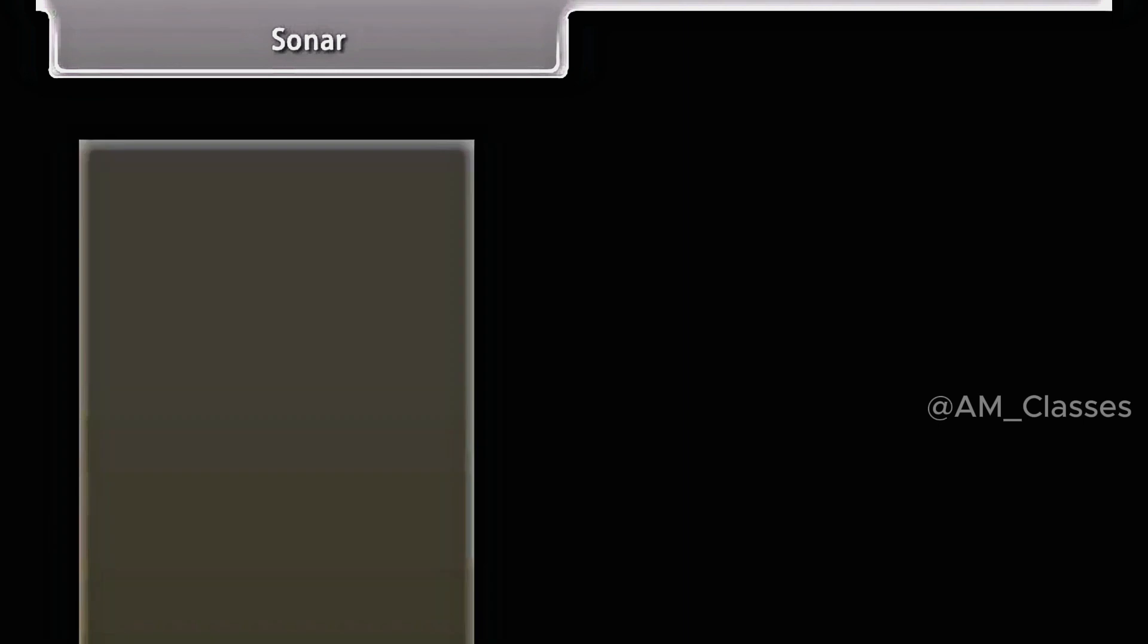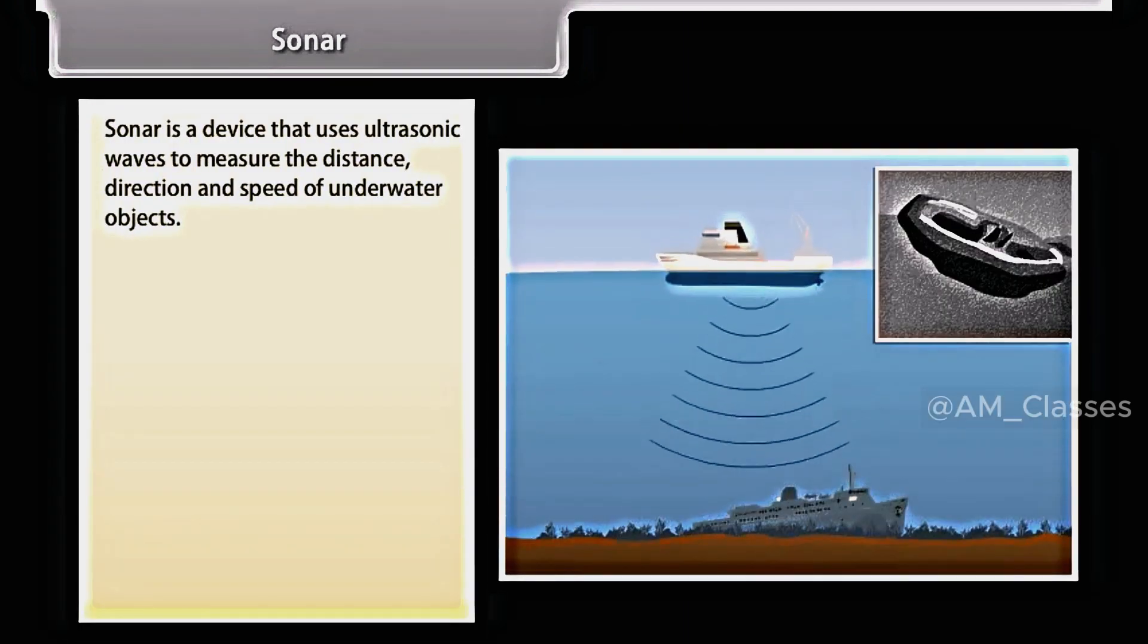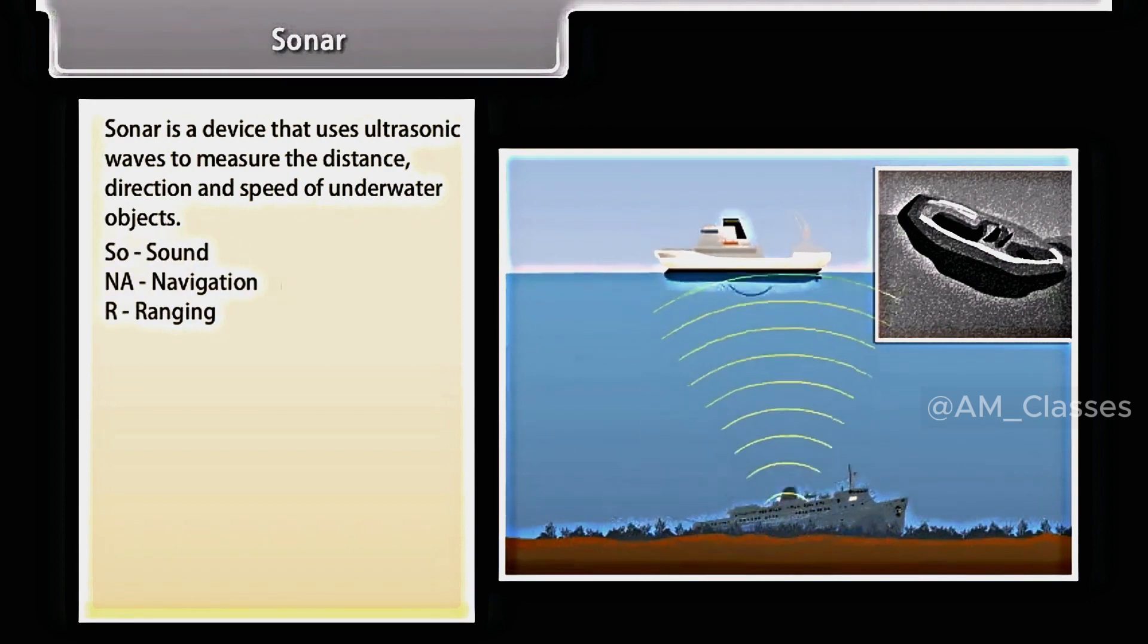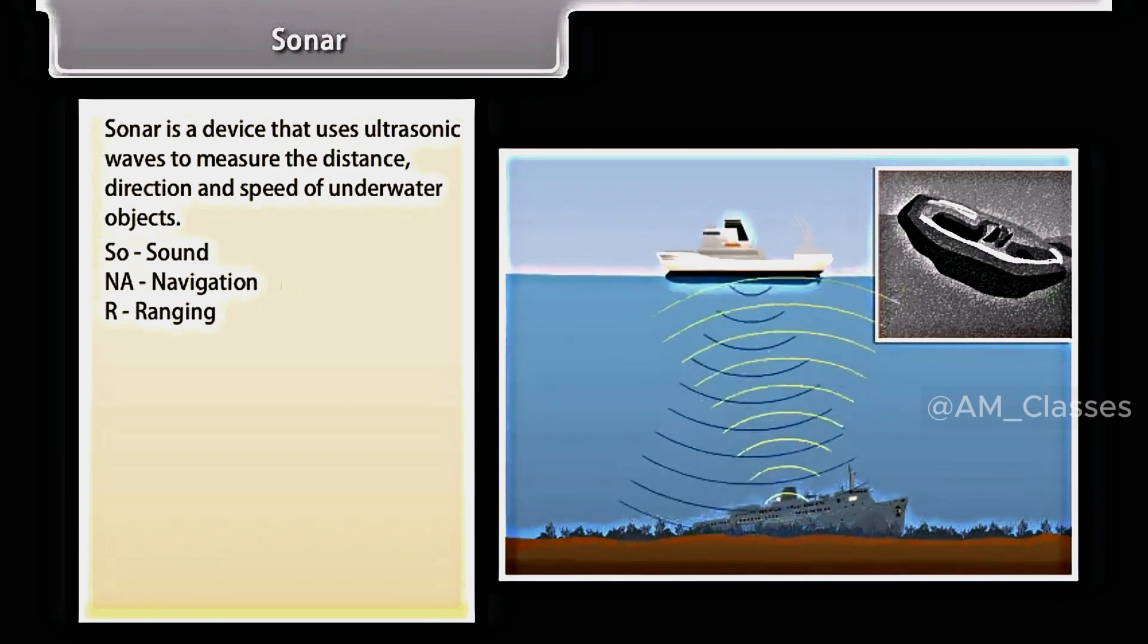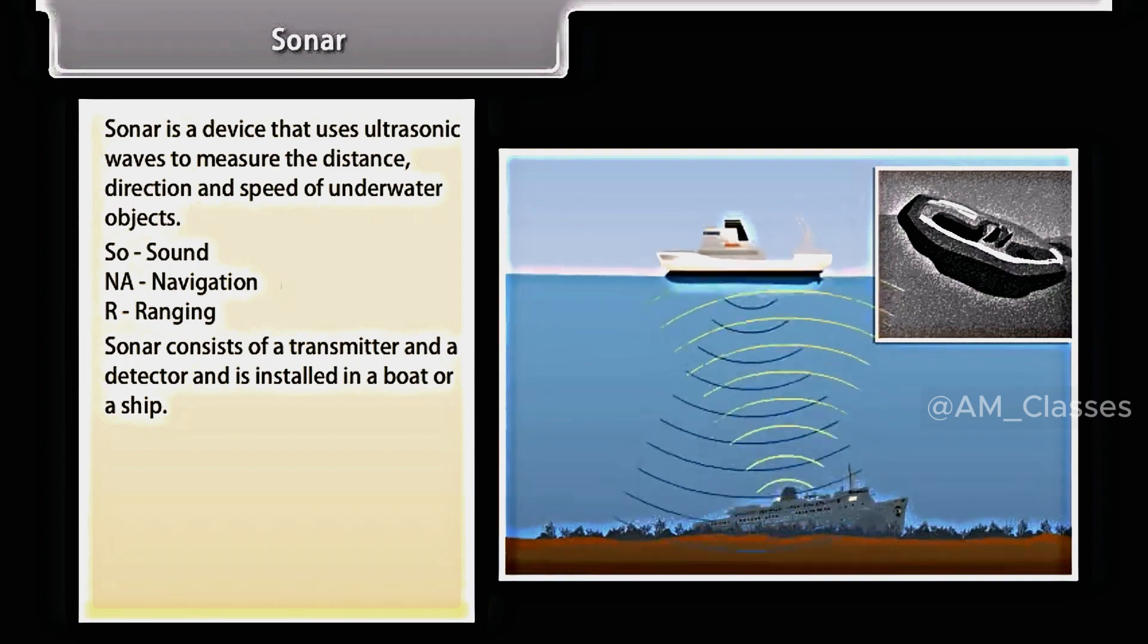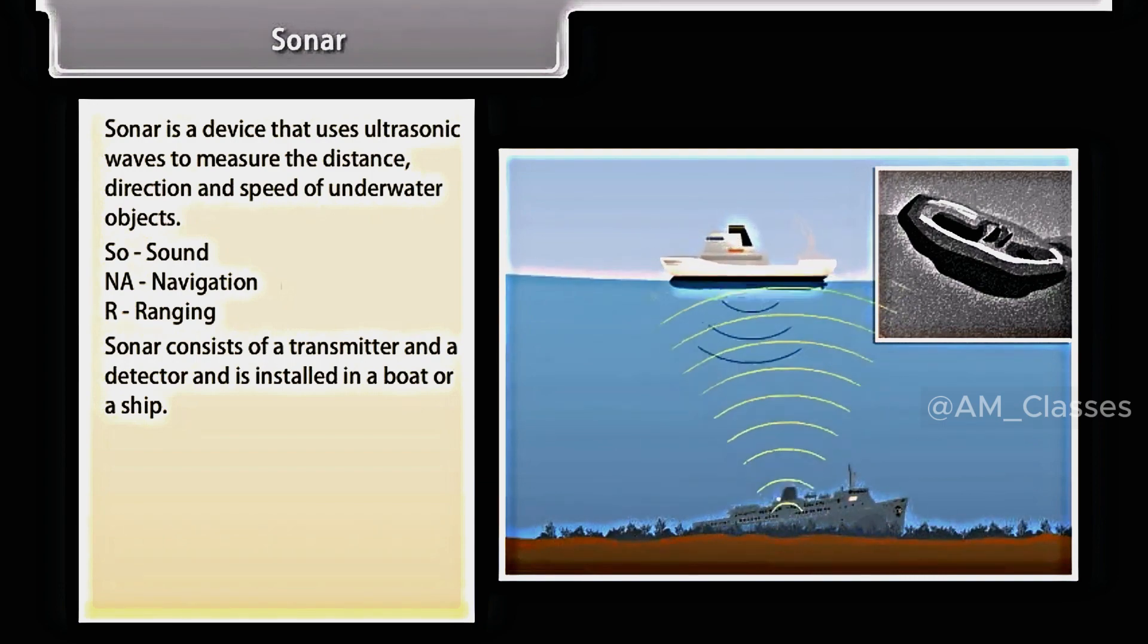Sonar. Sonar is the device that uses ultrasonic waves to measure the distance, direction, and speed of underwater objects. The word sonar stands for sound navigation and ranging. Sonar consists of a transmitter and a detector and is installed in a boat or a ship.